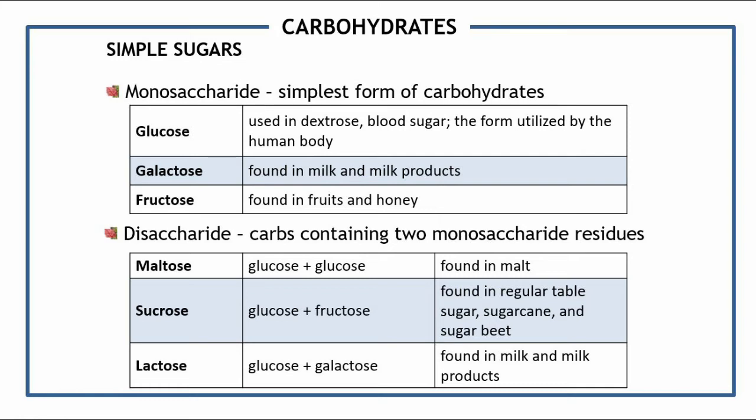Galactose is another monosaccharide that can be found in milk and milk products. It is usually found in the milk of mammals, which produce galactose. Another example is fructose, which can be found in fruits and honey.